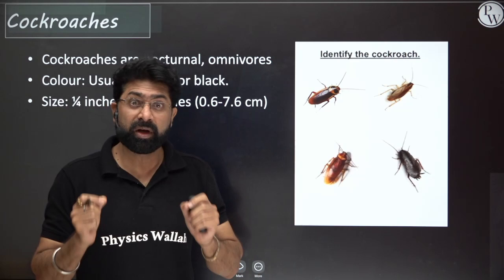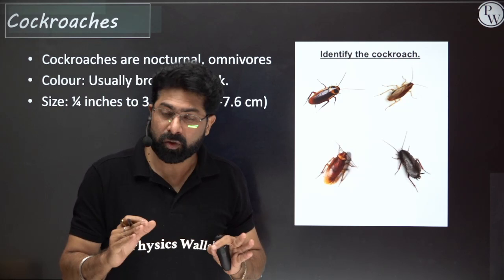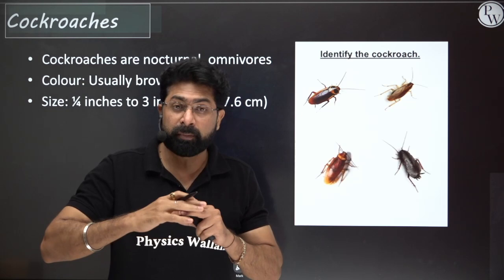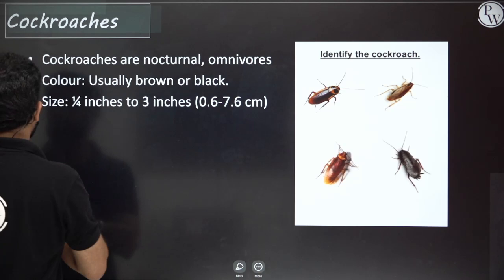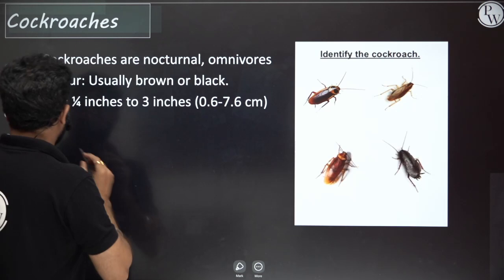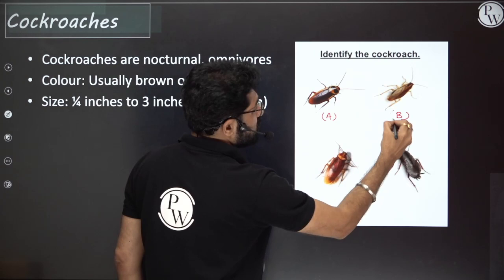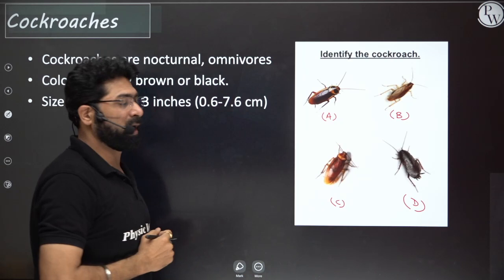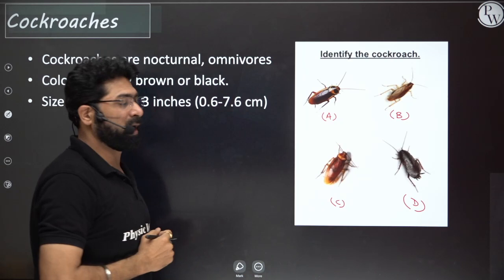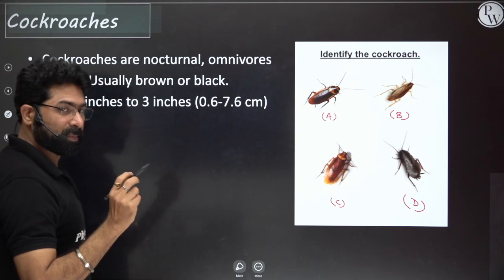NCERT says 'cockroaches' — it does not only specify one species, Periplaneta americana. It talks about cockroaches in general. Please remember that. Let's see how that can make a difference. Can you differentiate between cockroaches if I say identify A, B, C and D — which of the following is Periplaneta americana? It's not easy to identify.